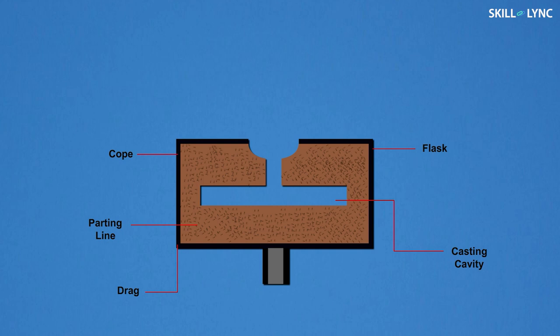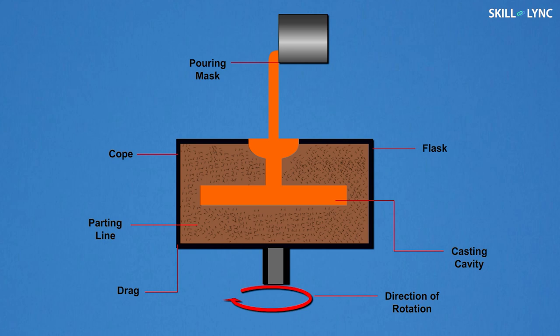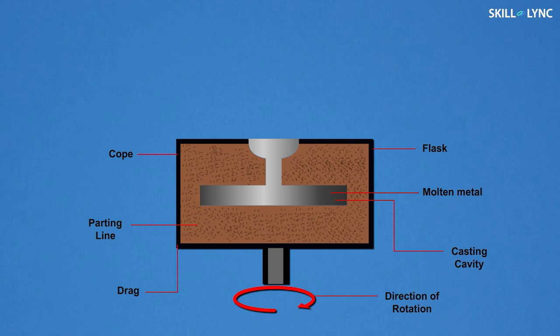The mold is allowed to rotate at high speed with the angle of rotation always being vertical. The molten metal is poured into the mold cavity through the pouring basin. Due to the forces generated by rotation, the molten metal fills the entire cavity. As the molten metal cools down and solidifies, the mold is destroyed and the final casting is obtained.